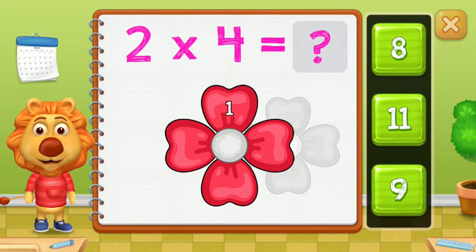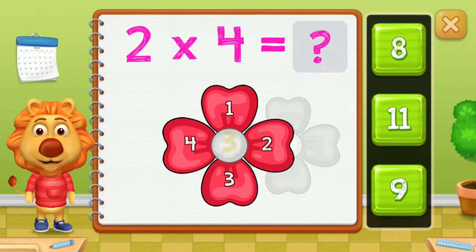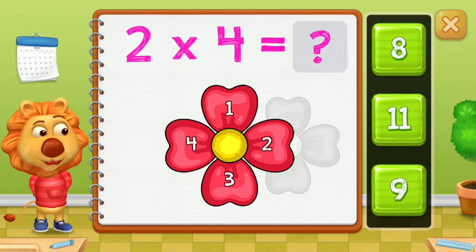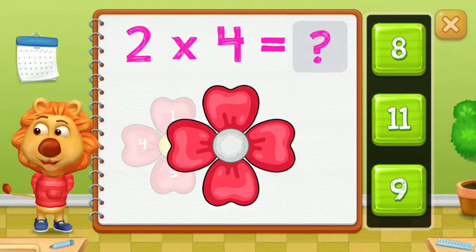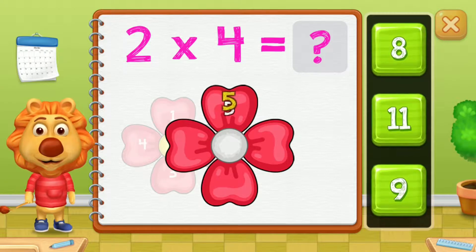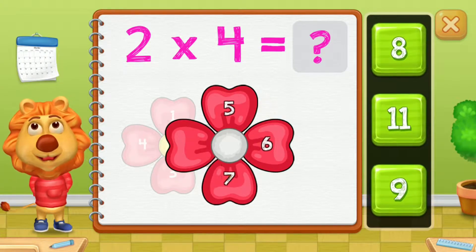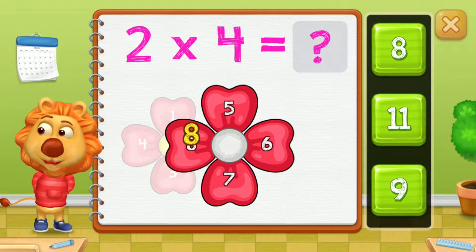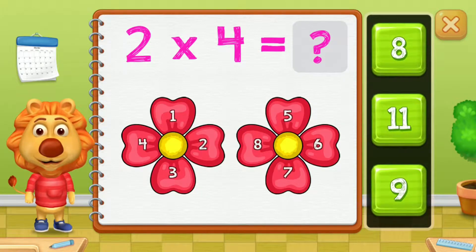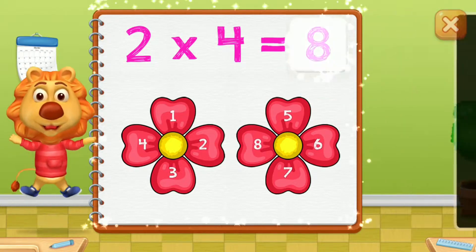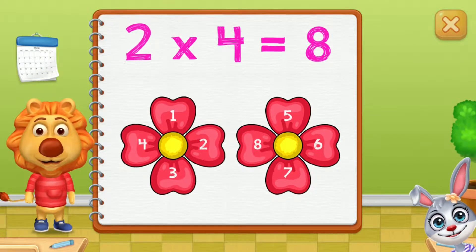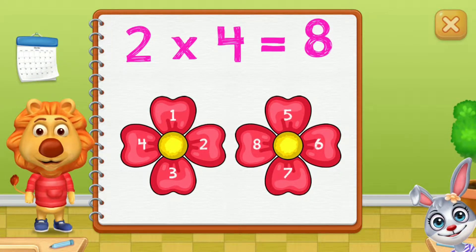1, 2, 3, 4, 5, 6, 7, 8. 2 groups of 4 equals 8.